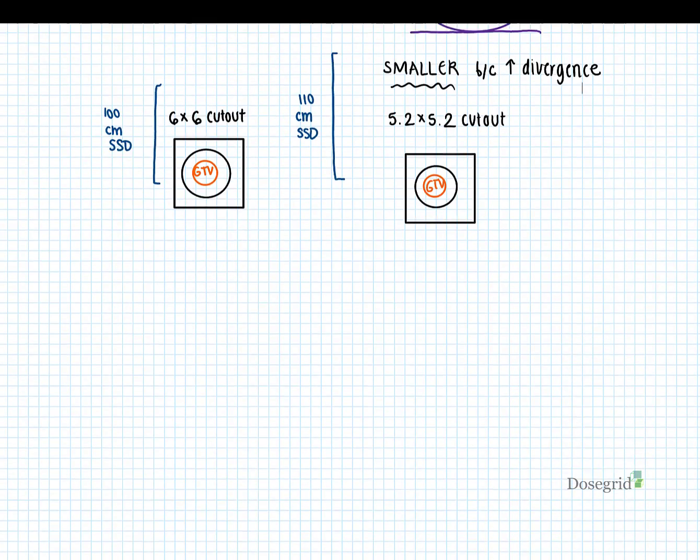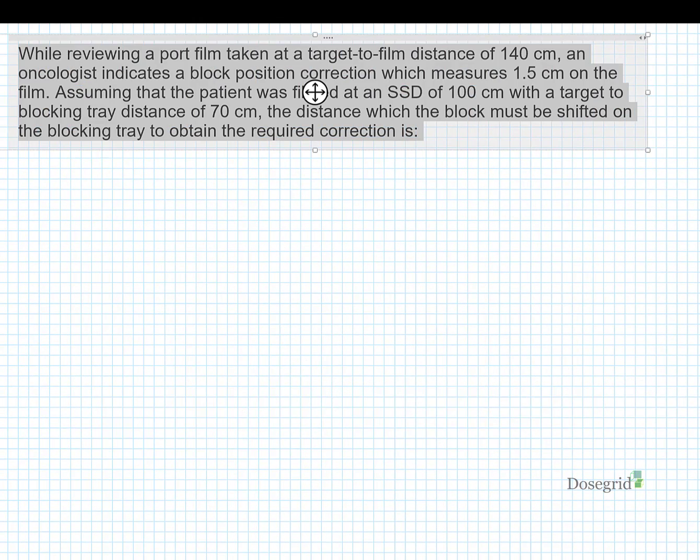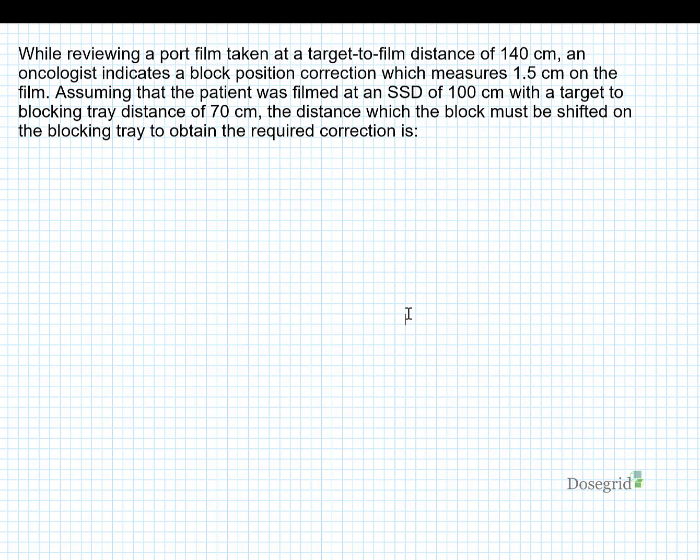Let's try an example. Reviewing a film taken at a target-to-film distance of 140 cm, the doctor wants a block position correction of 1.5 cm on the film. The patient's at 100 cm SSD and the block is 70 cm from the target. Find the distance the block must be shifted to obtain the required correction.